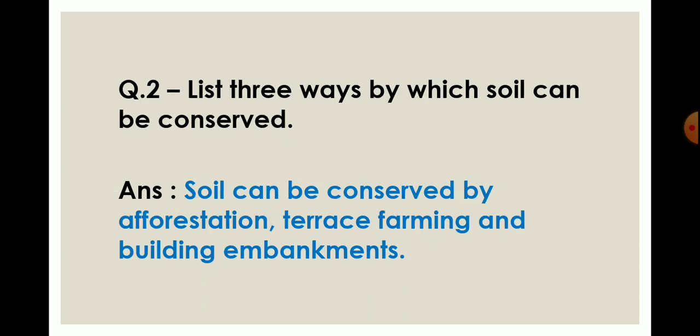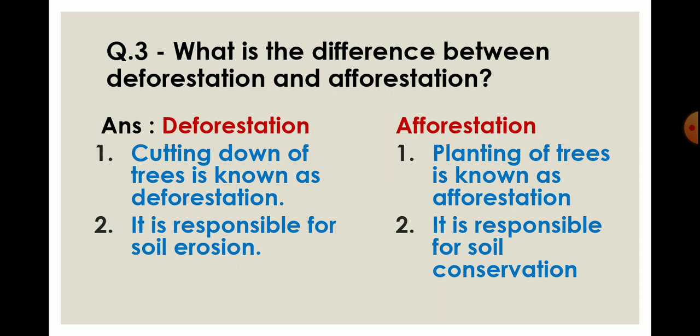The next question is: list three ways by which soils can be conserved. The answer is: soil can be conserved by afforestation, terrace farming, and building embankments. These are the three ways by which soils can be conserved.